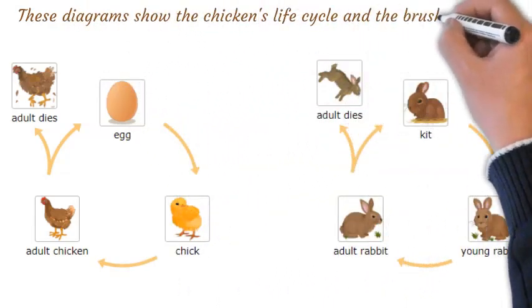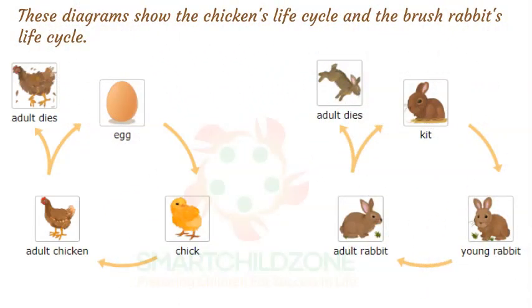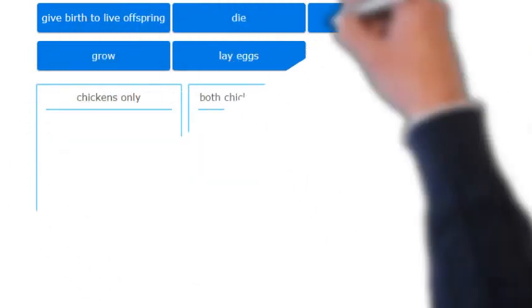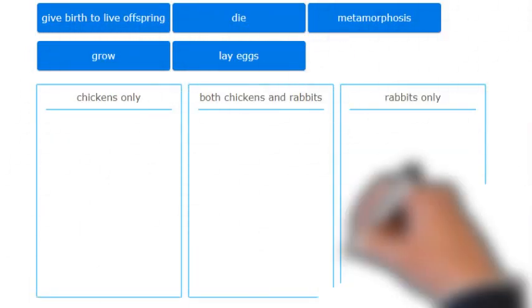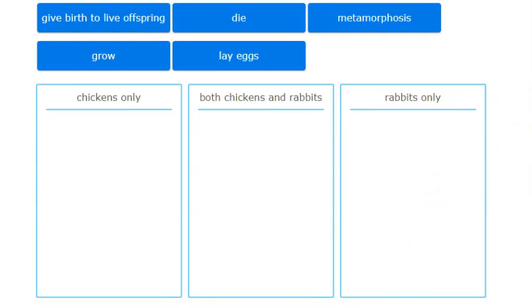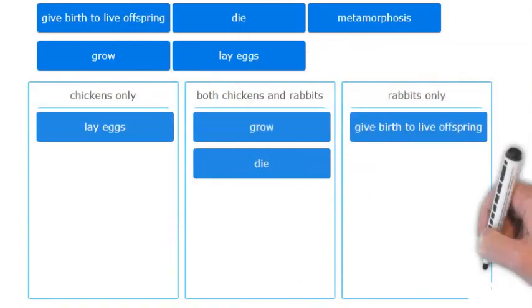These diagrams show the chicken's life cycle and the brush rabbit's life cycle. Compare the two life cycles and put each life cycle event into the correct column. Use the life cycle diagrams to help you. Some events might not belong in any column. You can pause this and do it yourself. Here are the answers.